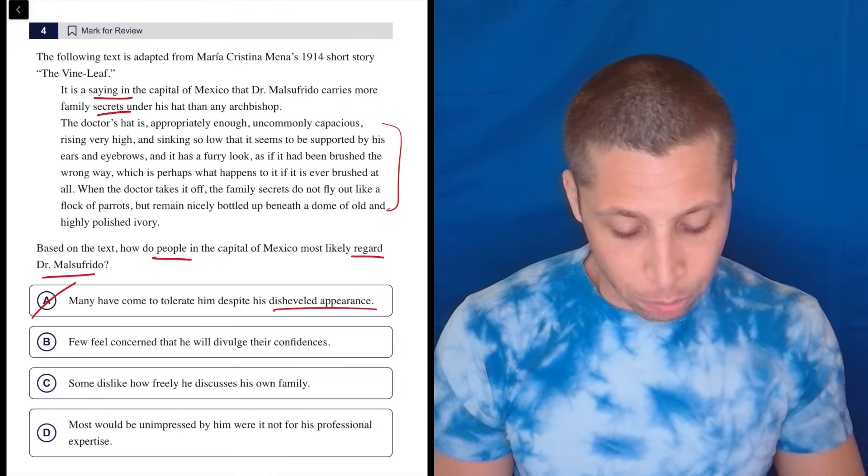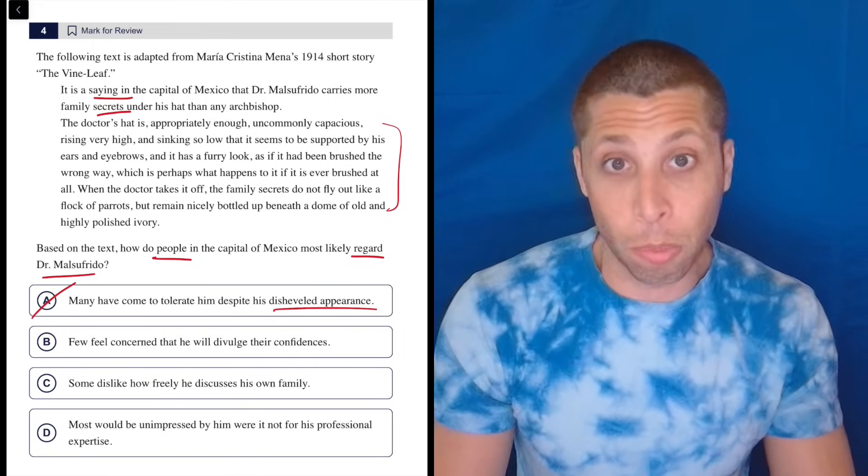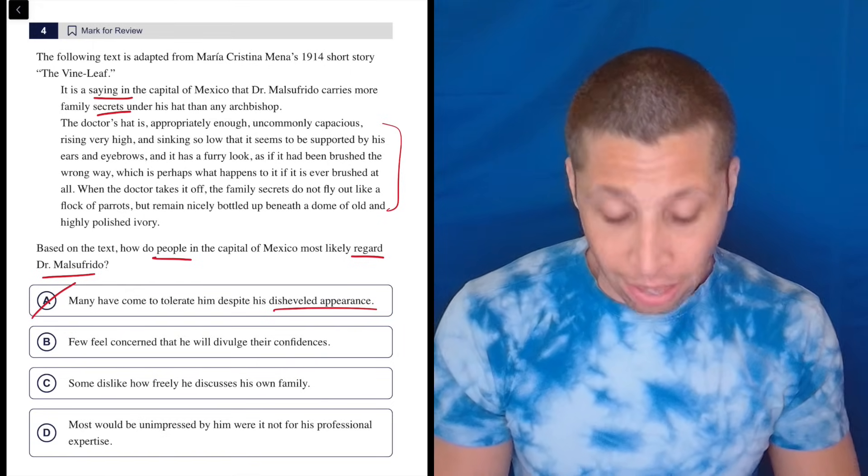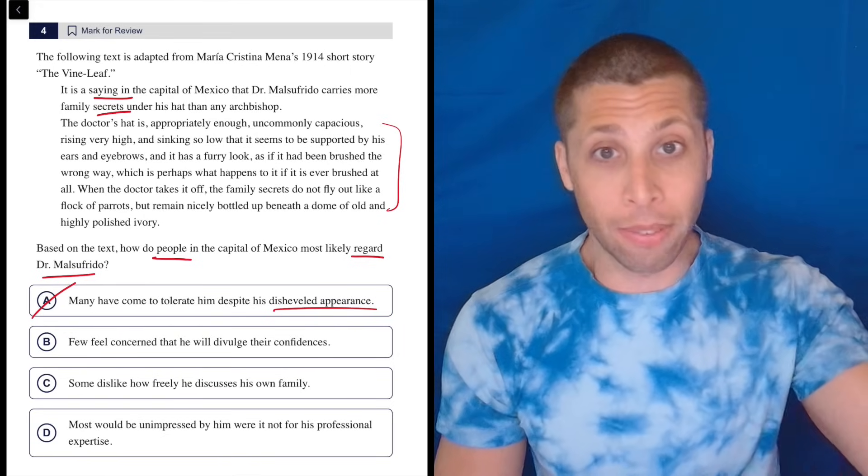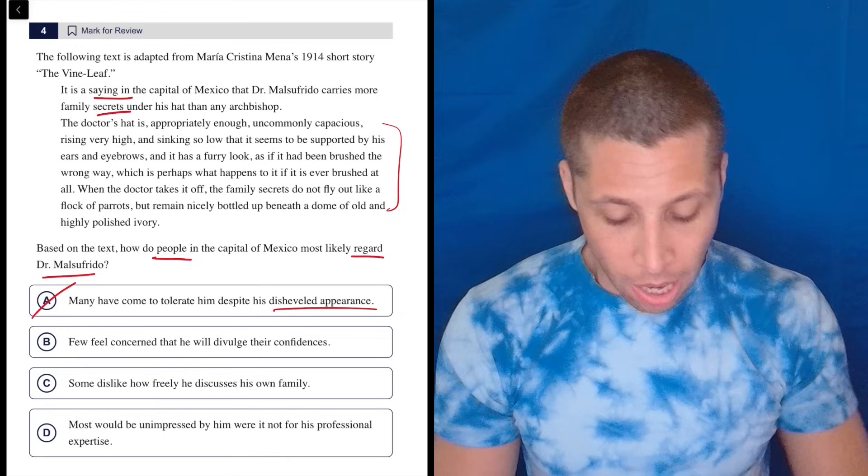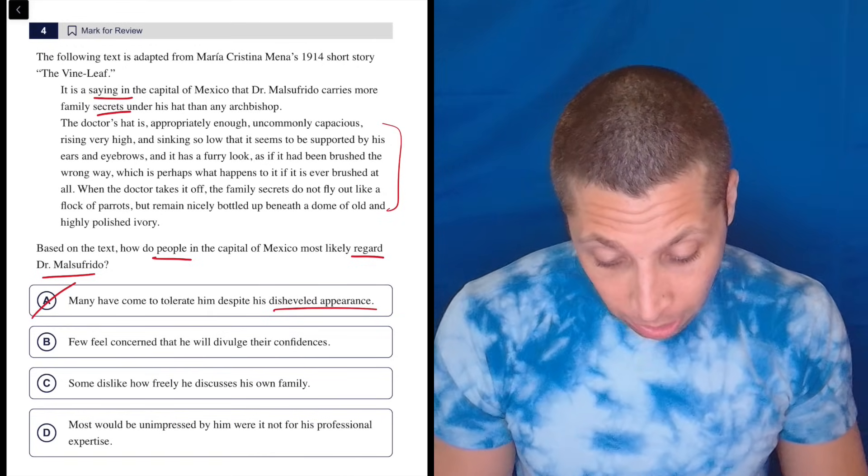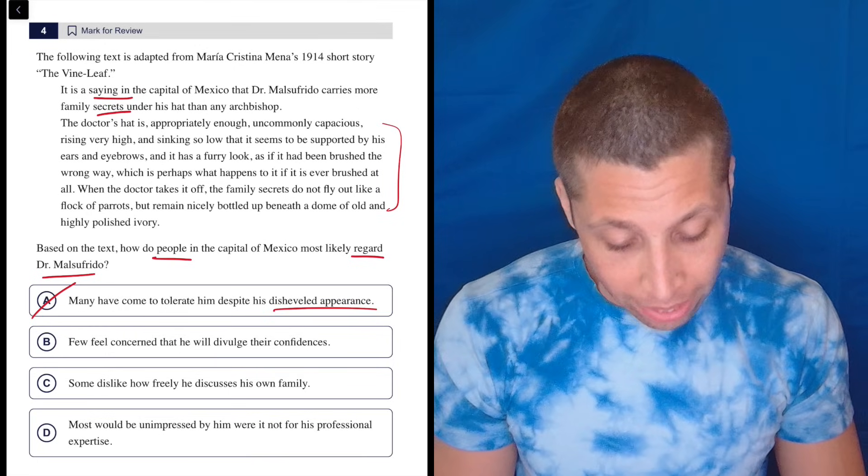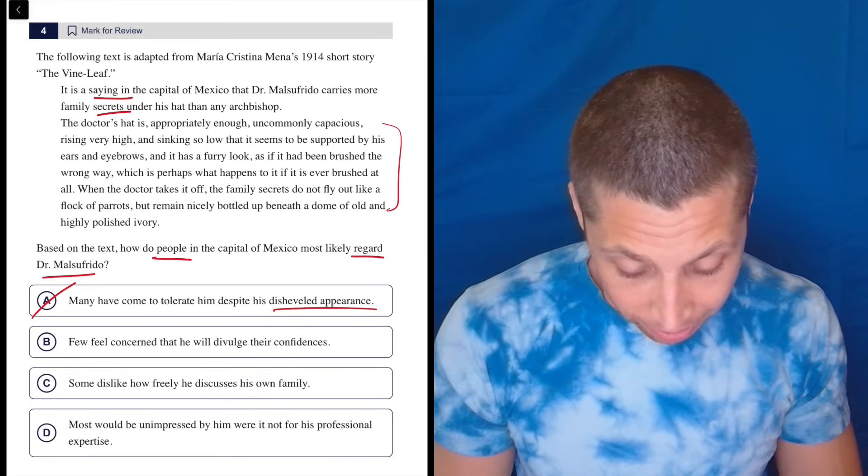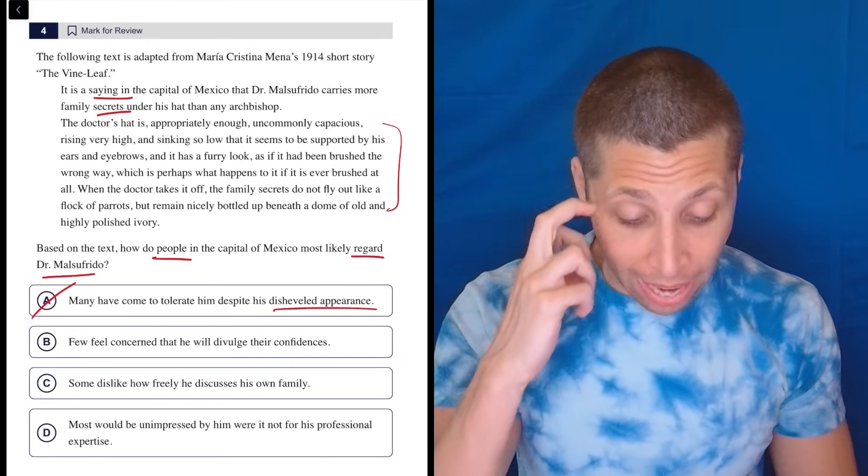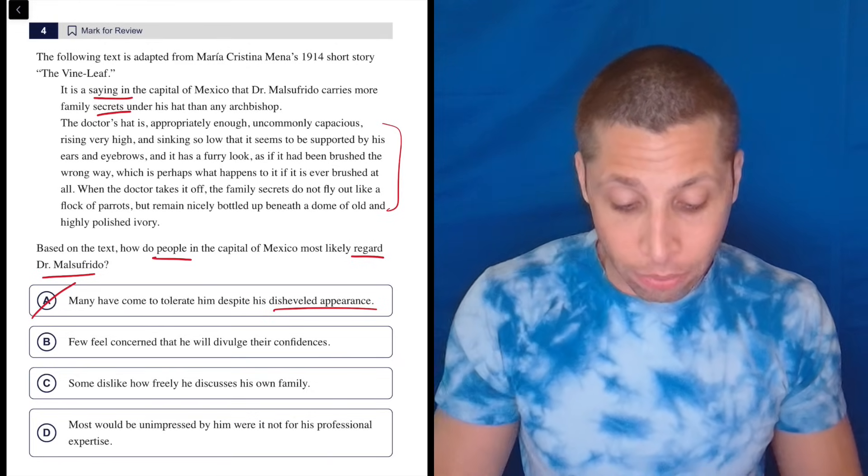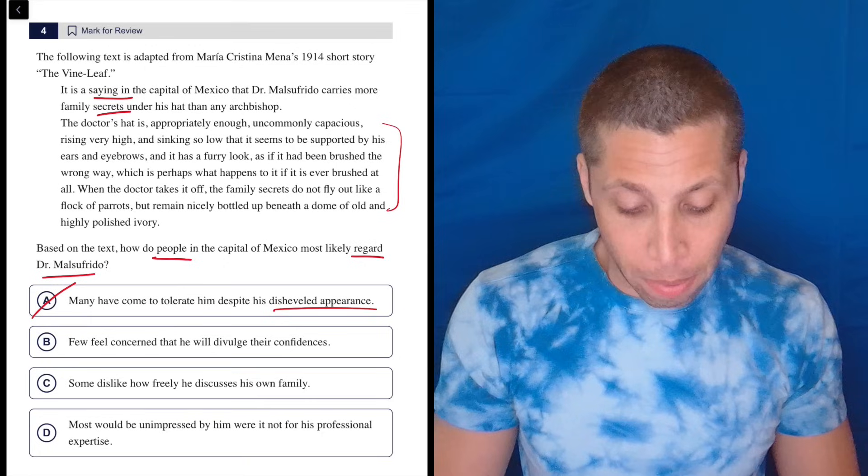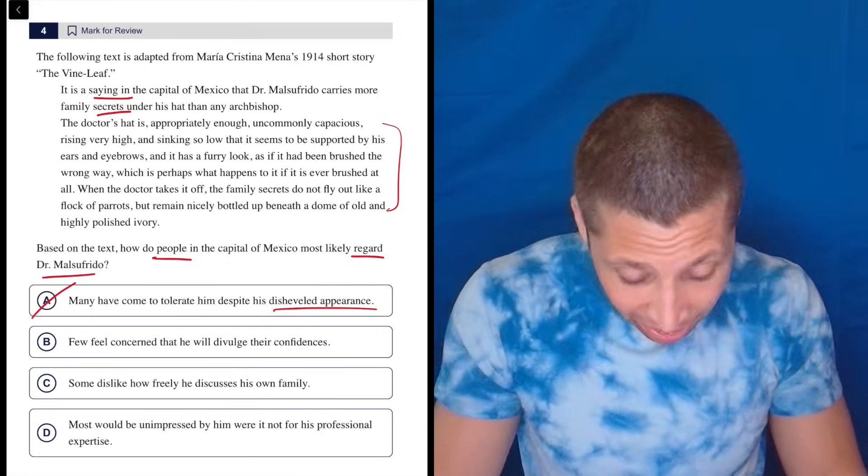B, few feel concerned that he will divulge their confidences. Confidences would be secrets, and divulge means to kind of give up, to reveal. So they're not worried about it. Okay. It is a saying in the capital of Mexico that Dr. Malsufrido carries more family secrets under his hat than any archbishop. So he has a lot of secrets. When the doctor takes off his hat, the family secrets do not fly out like a flock of parrots, but remain nicely bottled up. So, okay, I kind of get it.